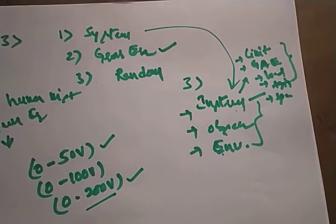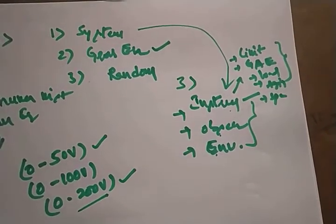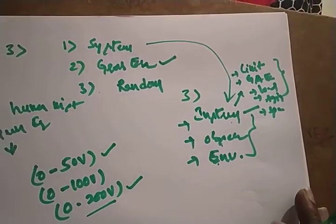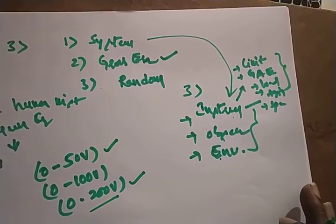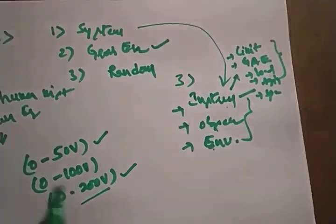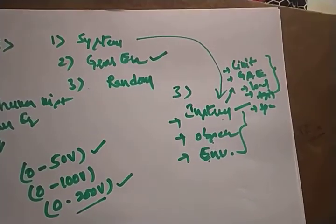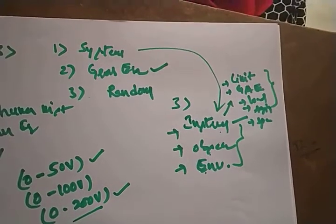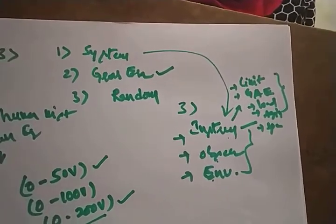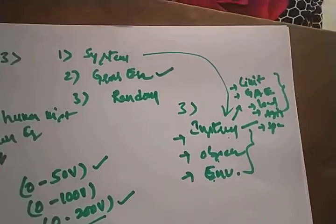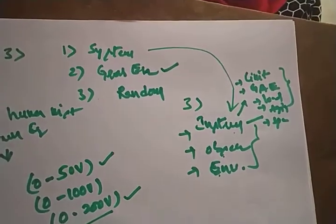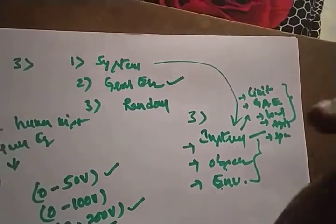If a manufacturer specifies the percentage error, we call that a percentage limiting error. Limiting error has a number of definitions and formulas for deriving the percentage limiting error. The instrument is manufactured with a specified error. If the manufacturer specifies that error, we call it a percentage limiting error. If the user specifies that error, we call it a relative error.